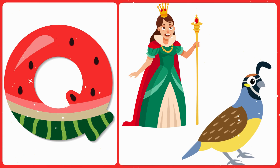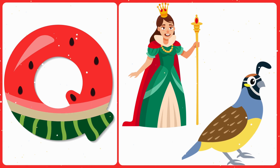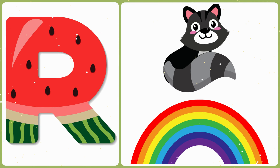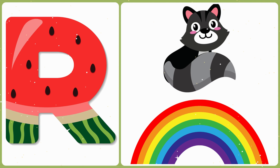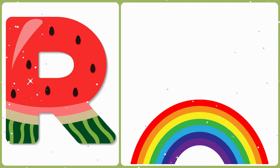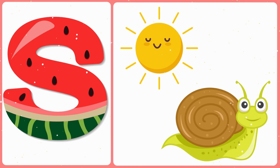Q — Q is for queen, Q is for quail. R — R is for raccoon, R is for rainbow. S — S is for sun, S is for snail.